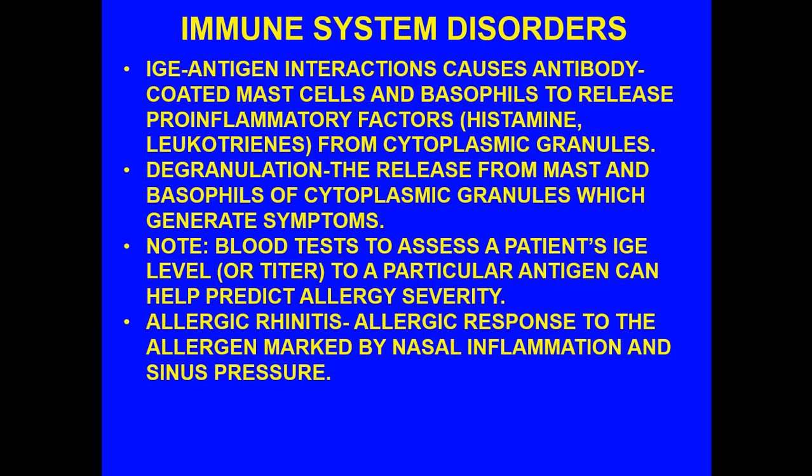The IgE-antigen interactions act on antibody-coated mast cells and basophils, activating them to release pro-inflammatory factors — usually histamine and leukotrienes — from cytoplasmic granules. This is where we get the term degranulation: the release from mast cells and basophils of cytoplasmic granules that generate the symptoms. Usually a blood test is taken to assess the patient's IgE titer to a particular antigen, which can help predict allergy severity.